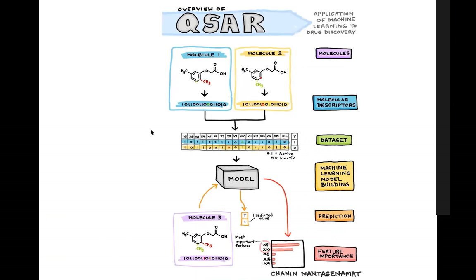In an infographic on Medium about QSAR, molecules are described in terms of molecular fingerprints — ones and zeros. A value of one means a particular feature is present; zero means it is absent. This tabular data is then assigned a Y variable indicating whether the compound is active or not active, and we use this dataset to build a prediction model using machine learning.